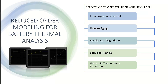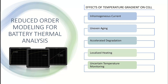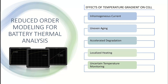We are going to look into reduced order modeling for battery thermal analysis. Battery degradation and temperature have an exponential relationship. The major impacts of temperature gradient inside the cell include inhomogeneous current, uneven aging, accelerated degradation, localized heating, and uncertain temperature monitoring.